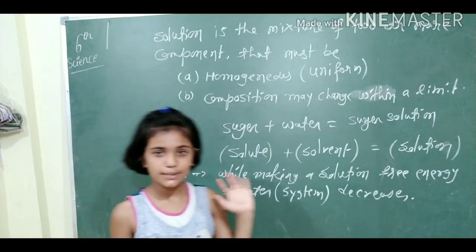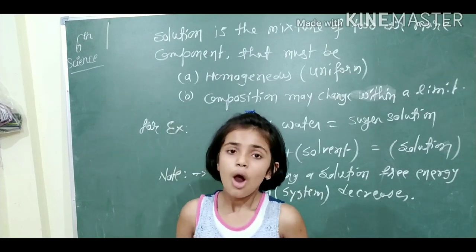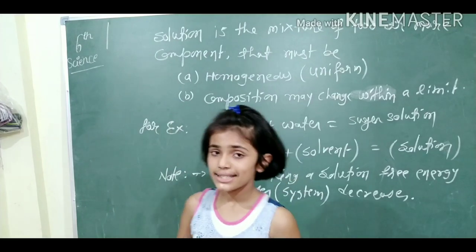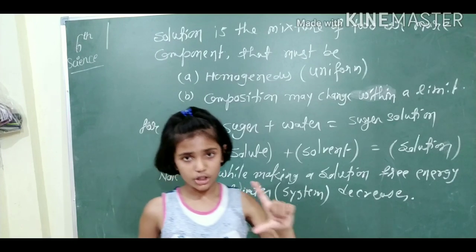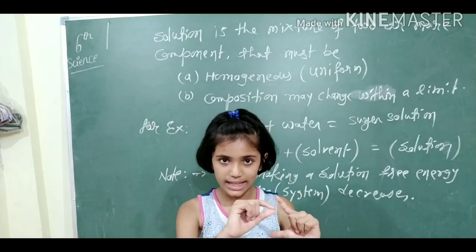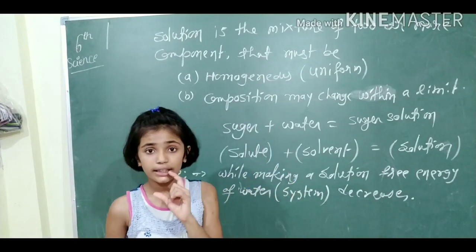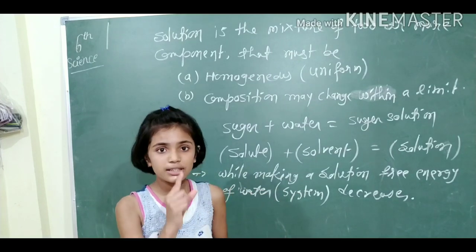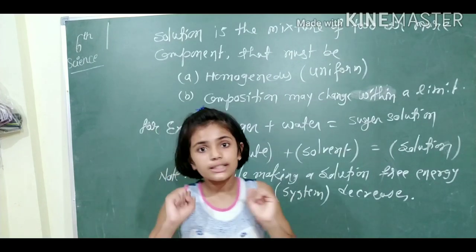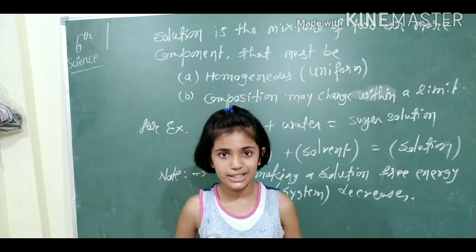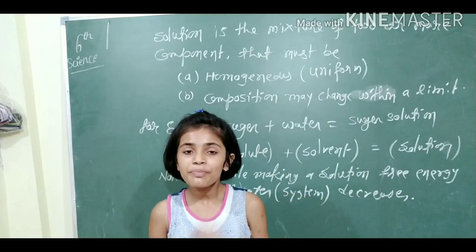In a solution, the first important point is that it is homogeneous, means uniform. So what is homogeneous? Homogeneous means that if we take water and add one spoon of sugar, and we stir it, then every sip will taste the same. That is called homogeneous — means uniform, means the same throughout.